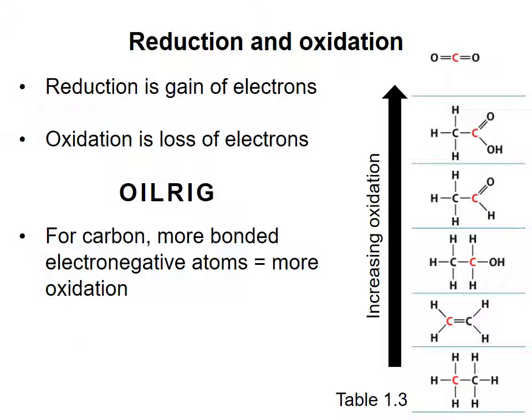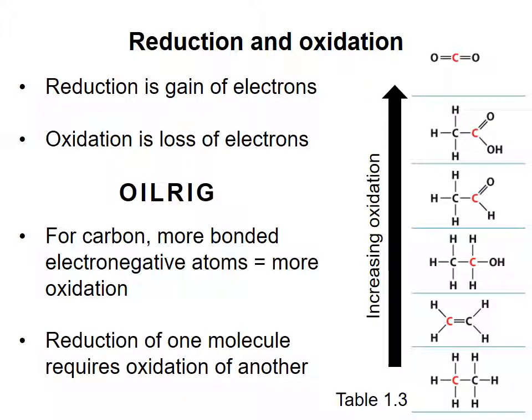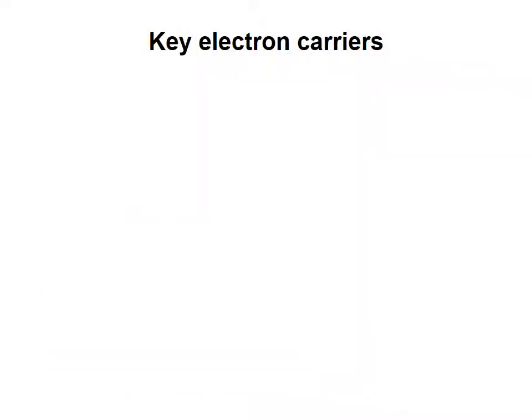In any reduction-oxidation or redox reaction, at least one molecule is oxidized and at least one is reduced. There cannot be oxidation of one molecule without a corresponding reduction of another. Many metabolic reactions involve reduction and oxidation. The cell has specific molecules that are commonly used as electron carriers.